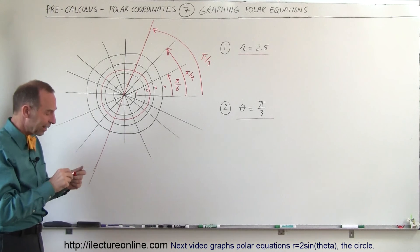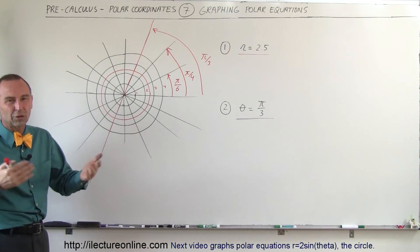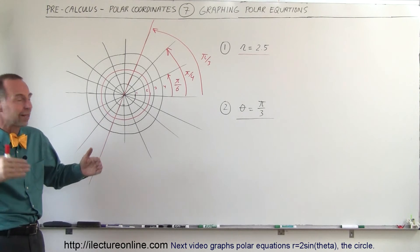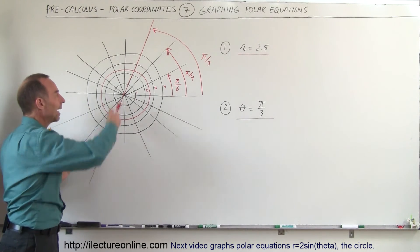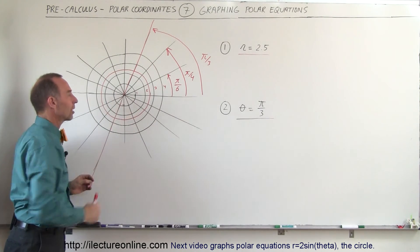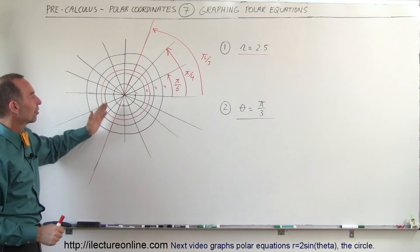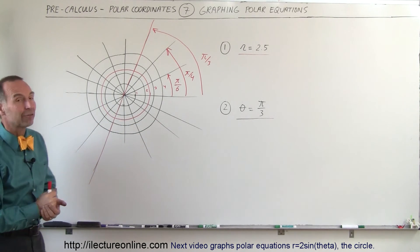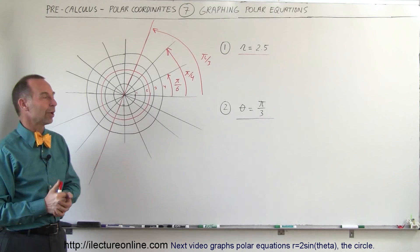So that's how we graph those equations, kind of analogous to when we have x equals a number or y equals a number, we have straight lines. Here we have circles, so a circle for r equals a constant and a straight line for theta equals a particular angle. That's how we graph those simple polar equations.